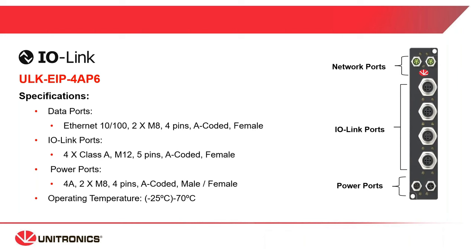A quick overview of the master specifications. For the four IO-Link port master, on the top you can see the Ethernet IP ports — we have two ports for daisy chain connection, in case you have more than one master on the machine or any other Ethernet IP device. Then you can see the four IO-Link class A ports, used for IO-Link devices such as sensors and actuators. On the bottom you can see the power ports, also with two ports for daisy chain connection. The operating temperature is minus 25 to plus 70 degrees, quite a big range.